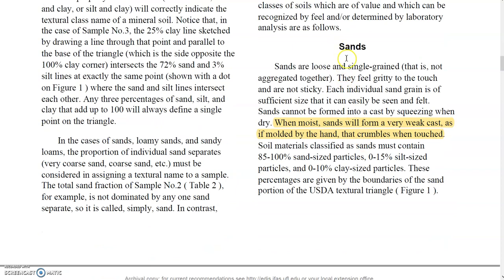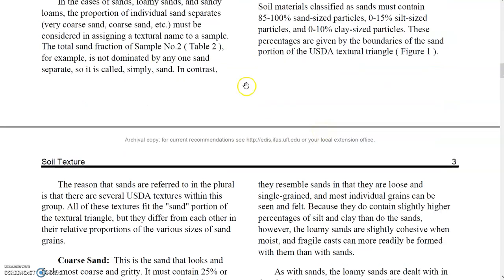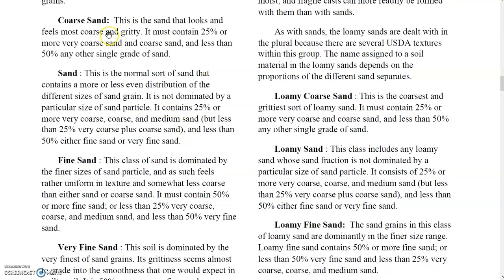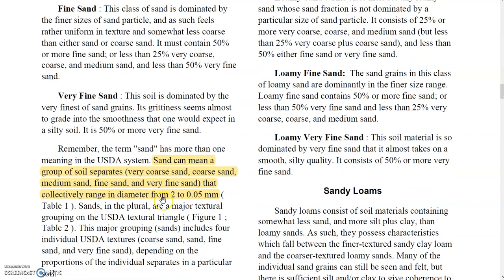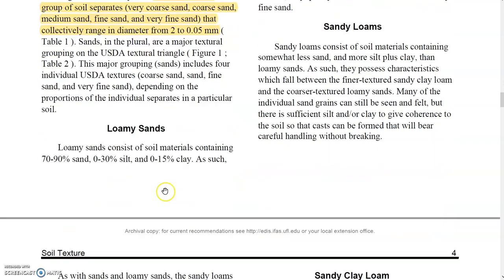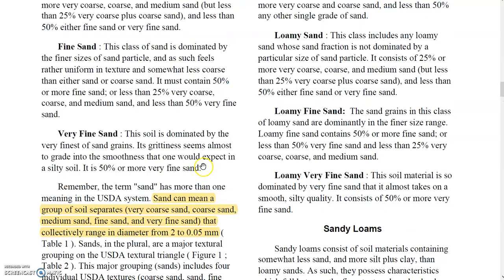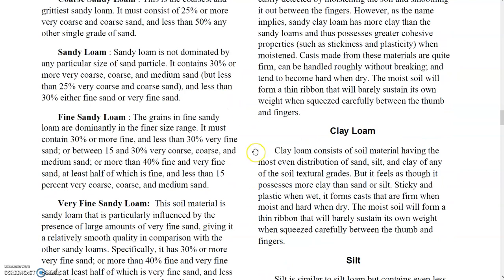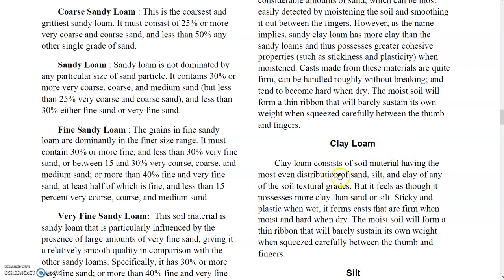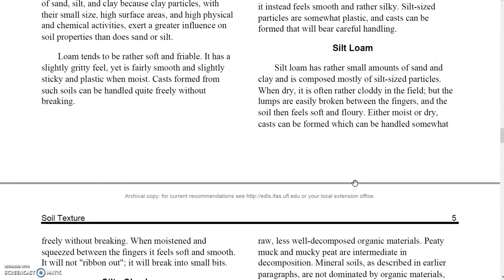Sand particles can be seen with the naked eye — we do not need a microscope or any lens to visualize them. Sand is separated into five categories: coarse sand, fine sand, and very fine sand, ranging from 2 to 0.05 mm. Clay loam consists of soil material having a fairly even distribution of sand, silt, and clay particles.